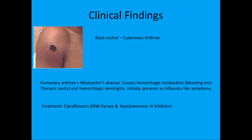This is cutaneous anthrax. It causes the black eschar — a black, necrotic center. What causes the necrotic part? The lethal factor, which decreases MAP kinase. Around the center you get edema. What causes the edema? The edema factor, which increases cAMP. That's how they can ask you a question on cutaneous anthrax.